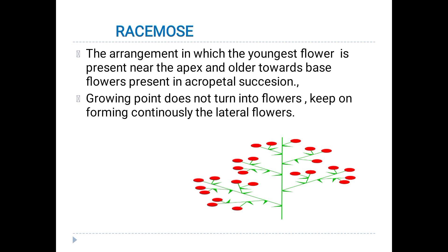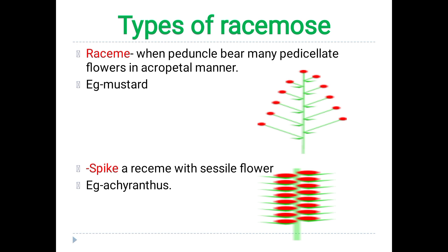In racemose inflorescence, the growing point doesn't turn into a flower — it keeps on growing and flowers are formed laterally. Now we are going to discuss the types of racemose inflorescence. When the peduncle bears many pedicellate flowers, this is called a raceme. An example of this is mustard.